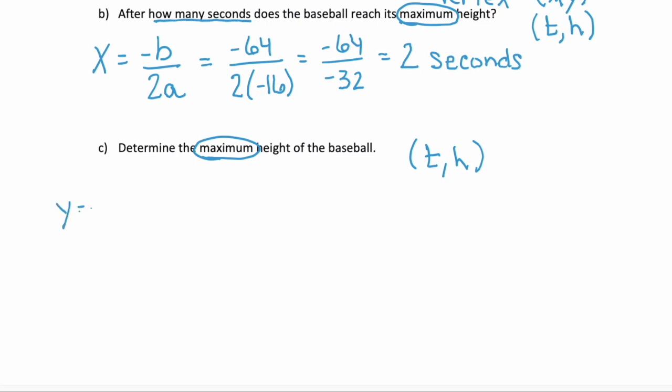So y equals f of 2. We substitute in the x value of our vertex in order to find the y. So we substitute that 2 back into that given function, and we have negative 16 times 2 squared, plus 64 times 2, plus 2. This equals negative 16 times 4, plus 128, plus 2.